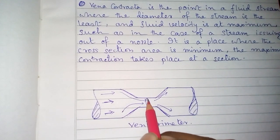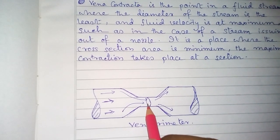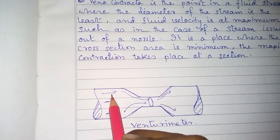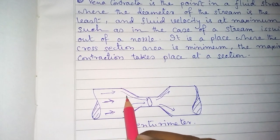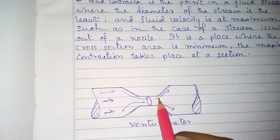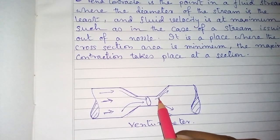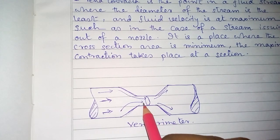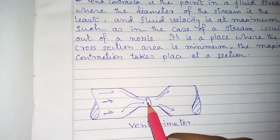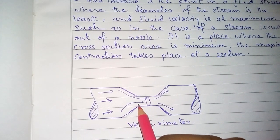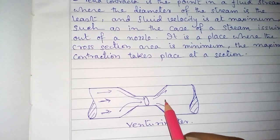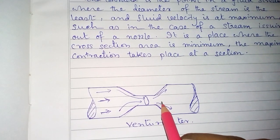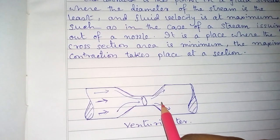The venturi meter looks like a convergent-divergent nozzle. When fluid enters, it behaves like a converging nozzle, and when fluid exits, it behaves like a diverging nozzle. At this point, the contraction is maximum, so the cross-sectional area is minimum. The kinetic energy of the fluid is increased with the help of the pressure energy of the fluid.